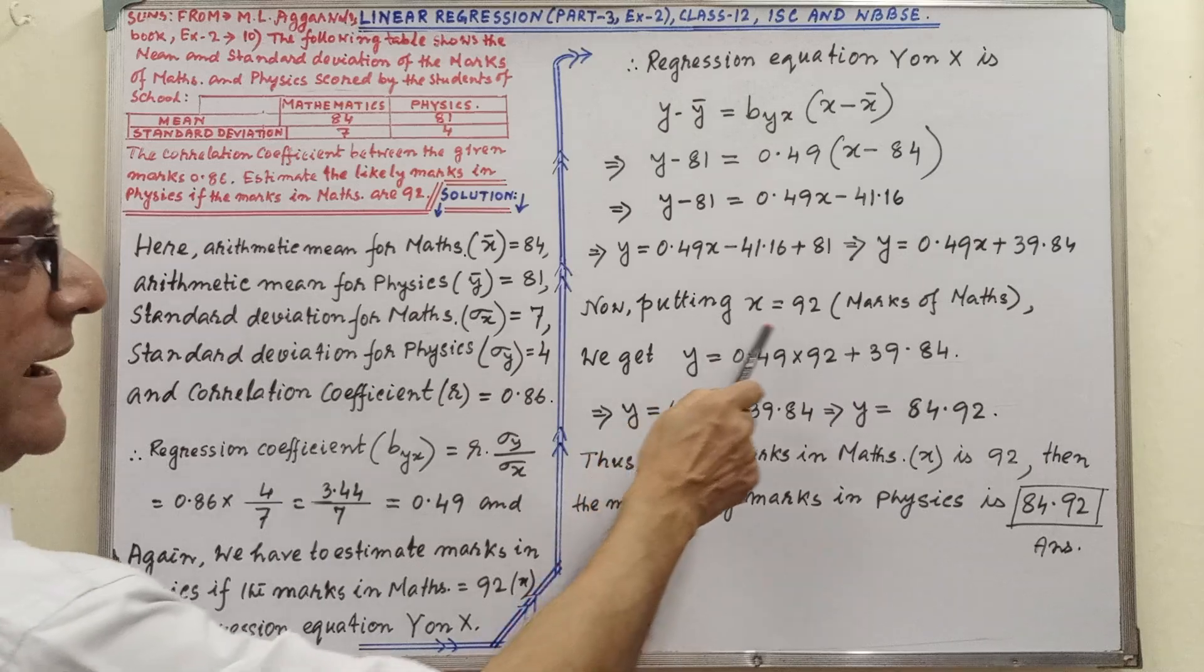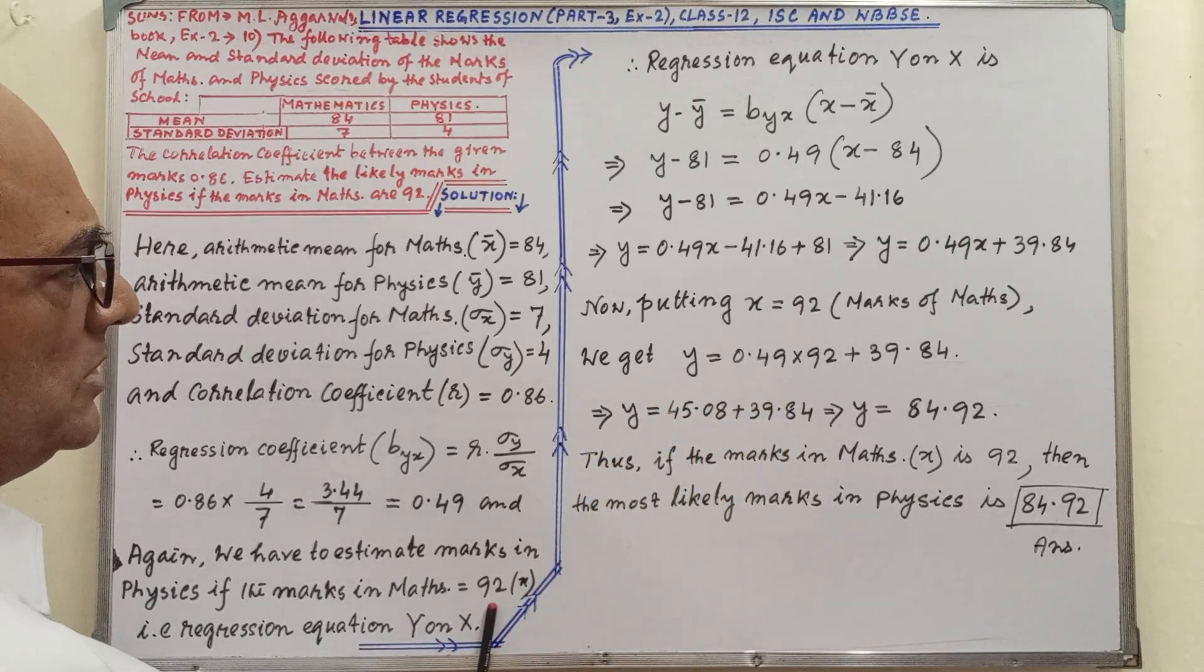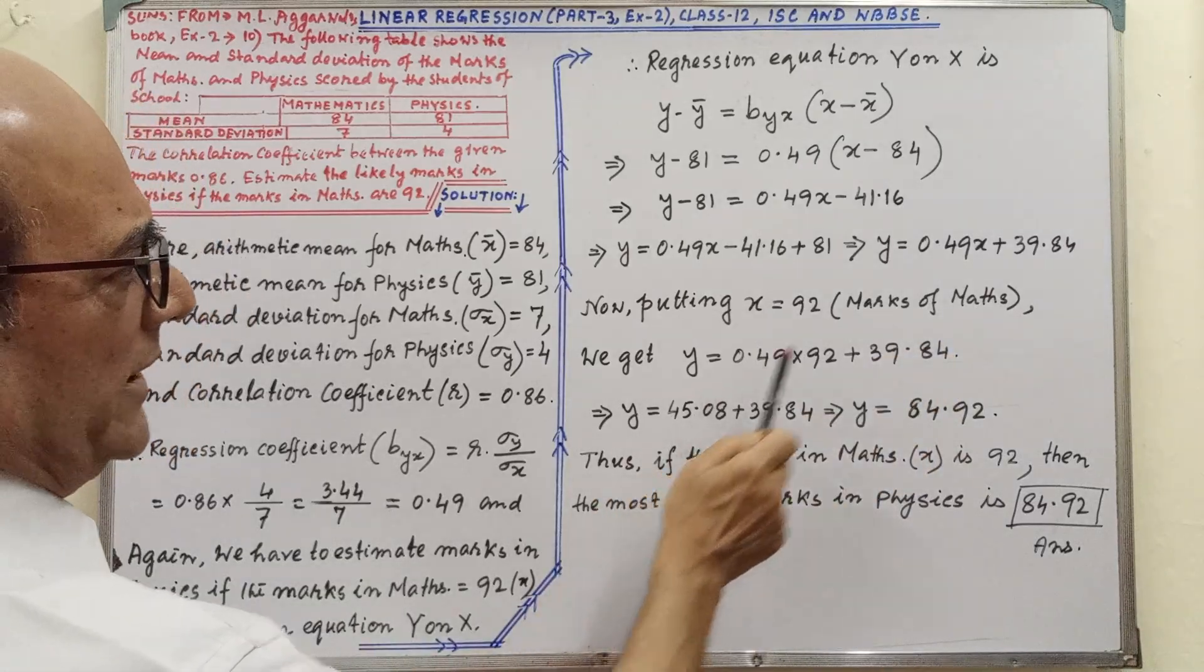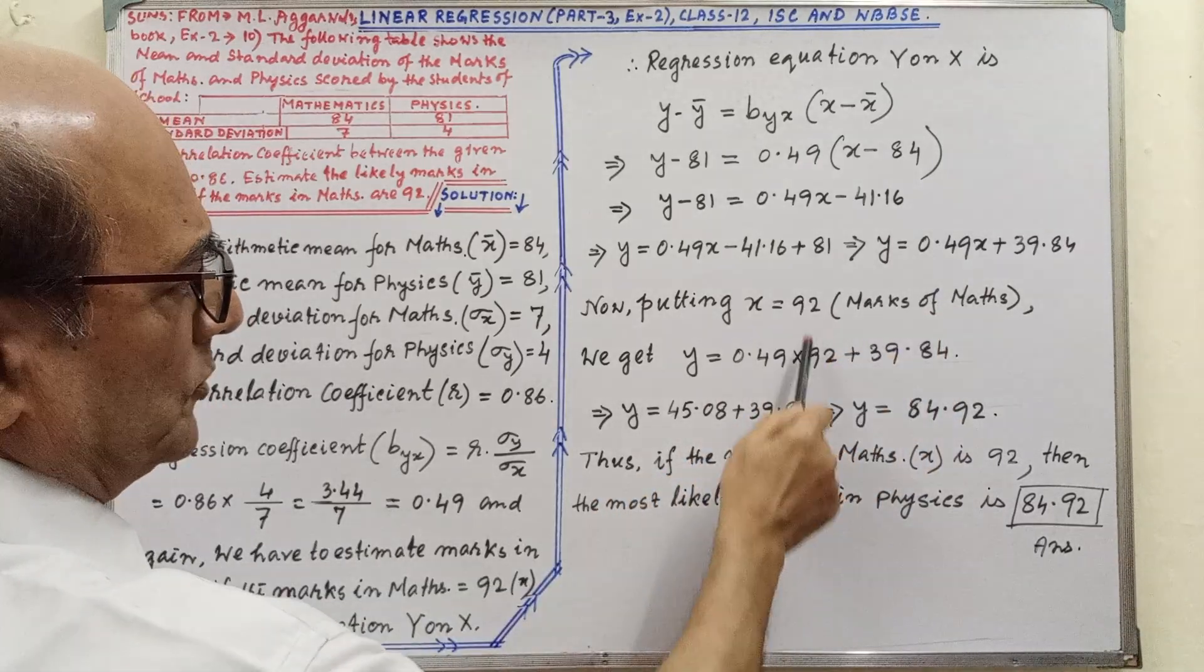Now putting x equals 92, x equals 92 marks of maths. We get y equals - in place of x we are putting 92.